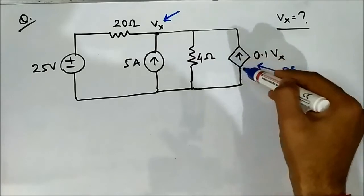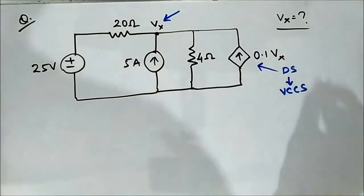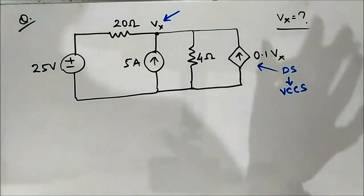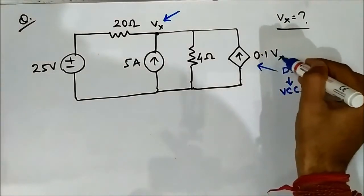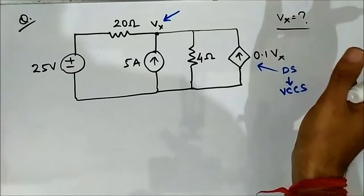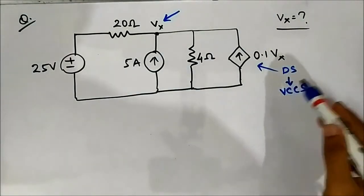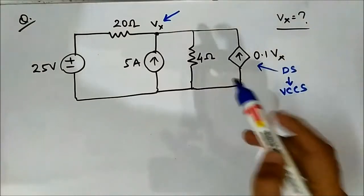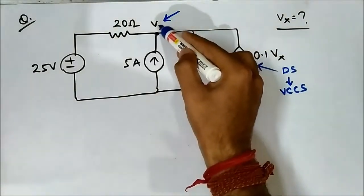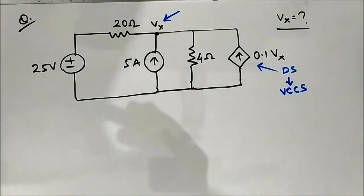Dependent sources are mostly represented in a square or rhombus shape. If a source is dependent on some other voltage or current parameter, then it is a dependent source. This is a voltage controlled current source, and we have been asked to find Vx using superposition theorem.